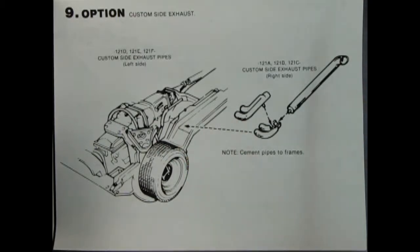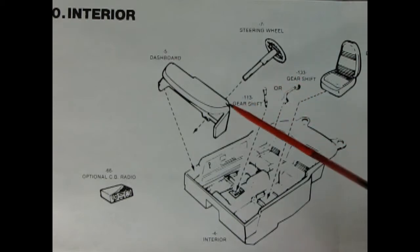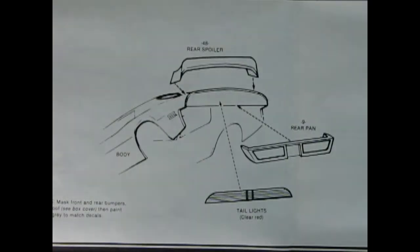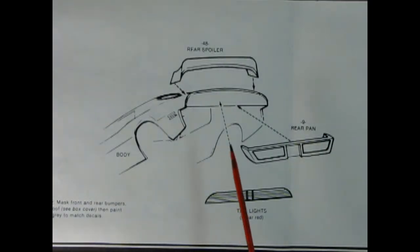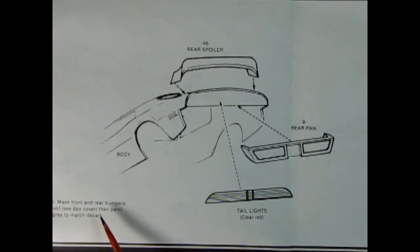Panel nine includes the options to put on these lake pipes - a three-piece manifold on both sides. Panel ten shows bucket seats going into the interior tub, choice of gear shift levers, nice steering wheel, dashboard and optional CB radio. Panel eleven shows all the body panels going on the back with rear spoiler, rear pan, red tail lights. It says mask front and rear bumpers and roof T-box art cover then paint dark gray.